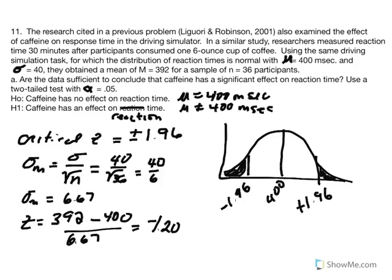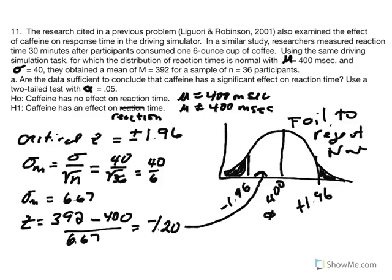At this point we can see where that z value resides — it's not large enough to be pushed out into the critical region. It falls between a z score of negative 1.96 and zero, which is the mean at the center of the distribution. So we're going to compute Cohen's d to help support this visual conclusion. At this point we know we would fail to reject the null hypothesis.